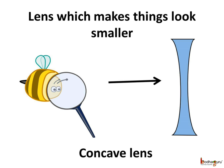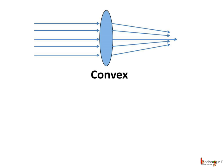If you see through a concave lens, things would appear smaller. Now, why do things appear bigger or smaller when we see through a lens? When light falls on an object, it is reflected and finally reaches our eyes. Then only we are able to see that object.